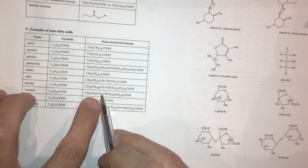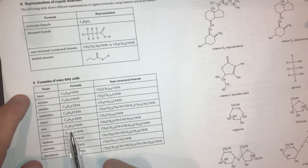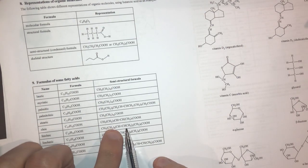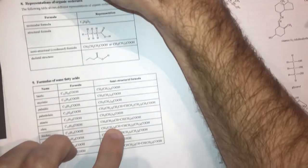Linoleic acid, let's have a look. This is it here. It's got three double bonds. So therefore, it's got three double bonds. Linoleic acid here has got two double bonds, so it's got two.